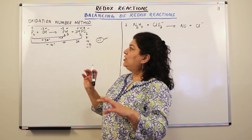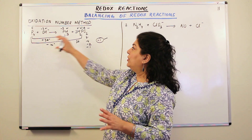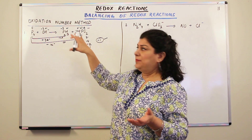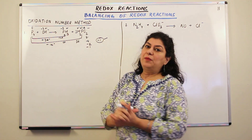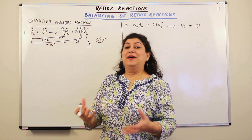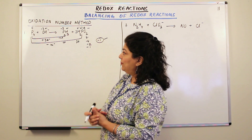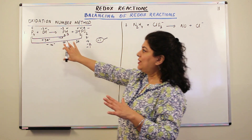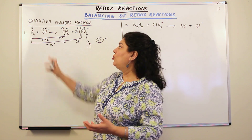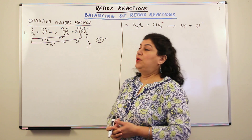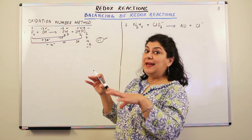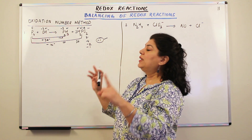In the next step we find out the charges on both sides of the equation. If charges are not equal, we balance them — and these reactions are taking place in basic medium. How do I know it's basic medium? It has OH negative present, which indicates a base. So if it is taking place in basic medium, you can balance the charges on both sides using OH negative.